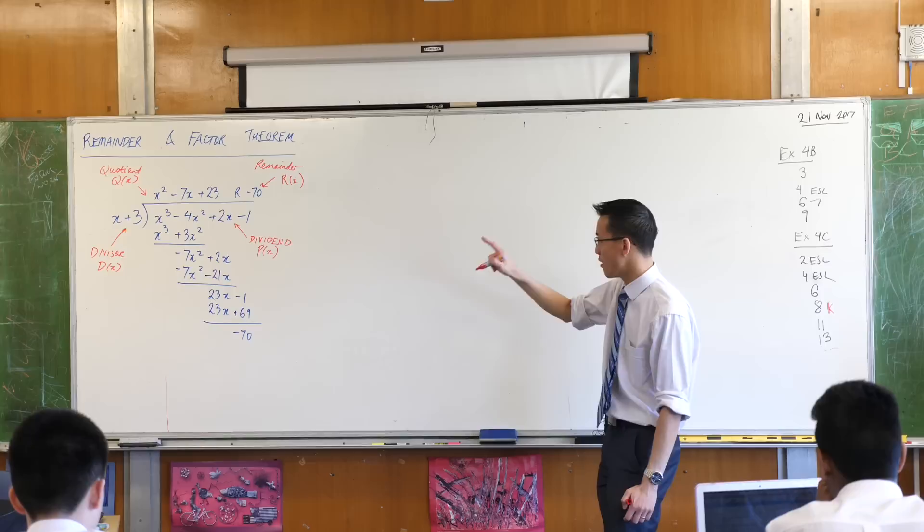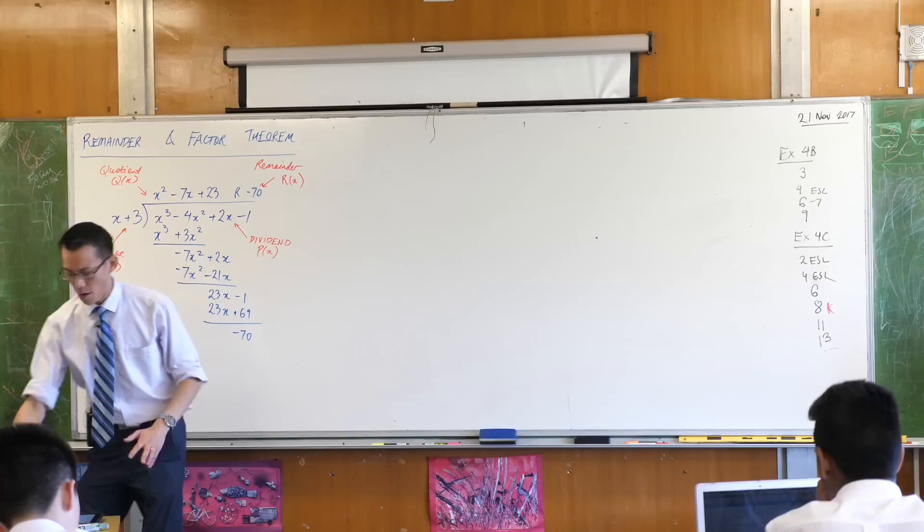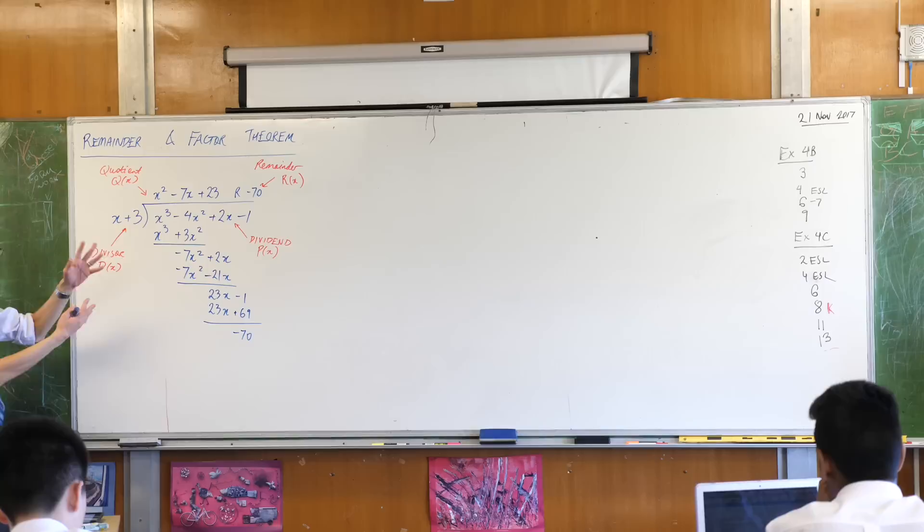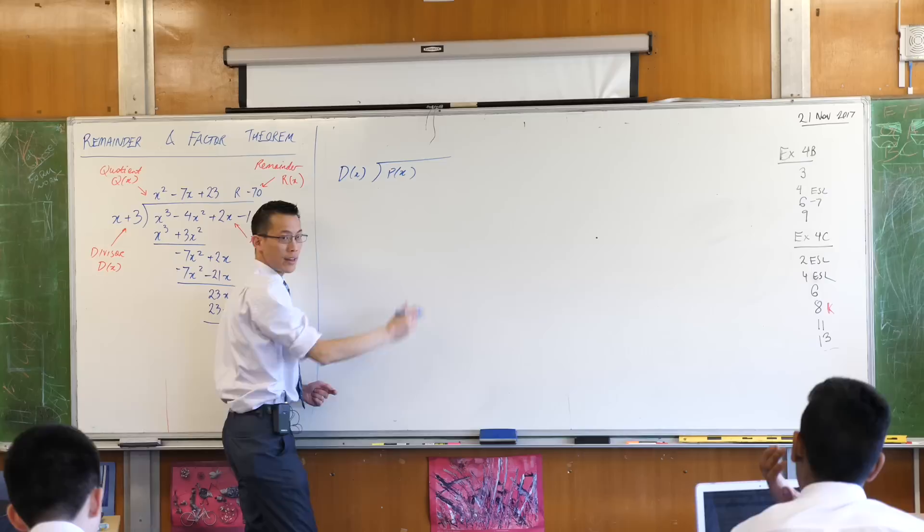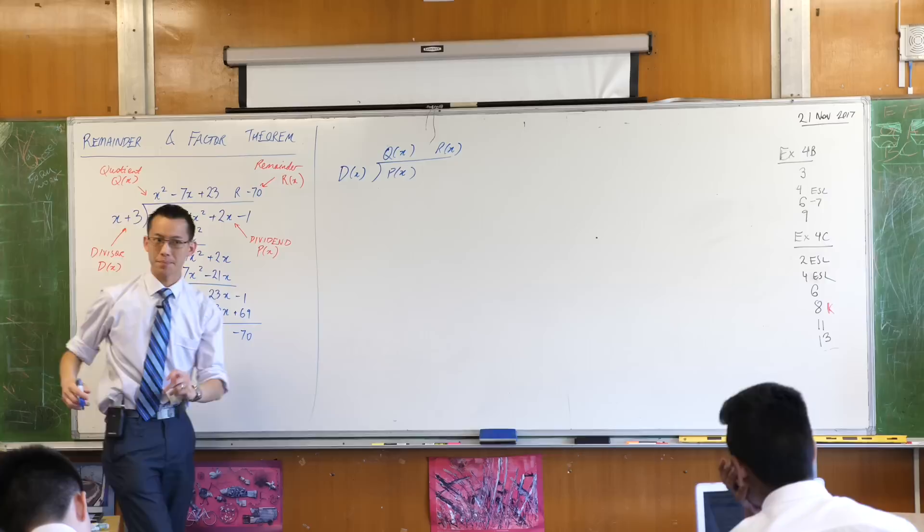So D, P, Q, and R, these are the pieces in here. What I want us to do is just write it again, but in general terms, not for this specific example, but generally speaking, we always have the divisor over here. We have the original polynomial, the dividend, underneath, and then what you get left with is your quotient and your remainder.